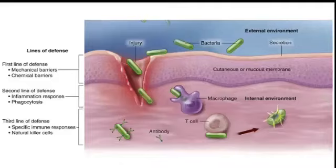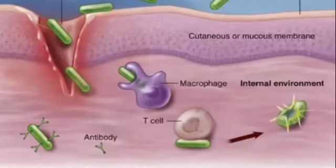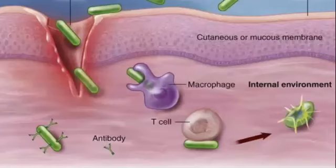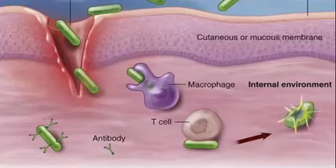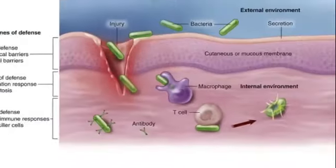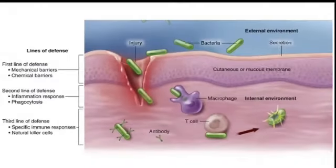The body triggers the inflammation process, secreting inflammatory markers, and phagocytosis happens with the help of macrophages. In this picture you can see the bacteria. If the skin is intact, bacteria cannot enter, but if there is any injury, our first line of defense breaks and bacteria enter the body. Once they enter, macrophages and T-cells start inducing inflammatory markers. Macrophages perform phagocytosis. The third line of defense is a specific immune response.